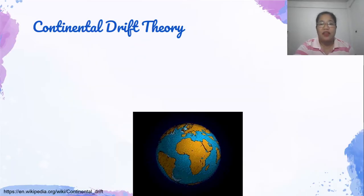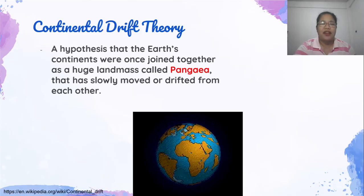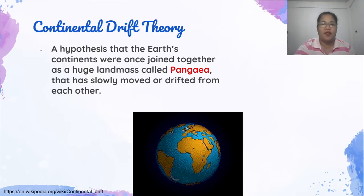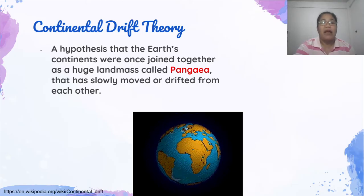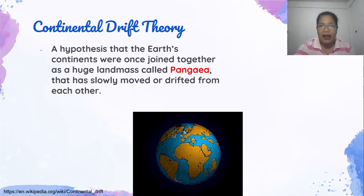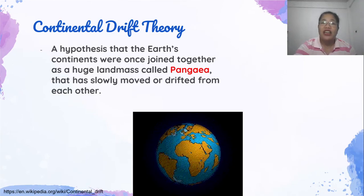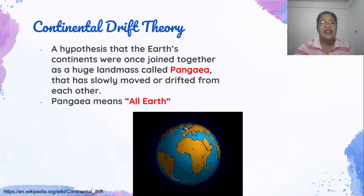Ano ang Continental Drift Theory? Makikita natin sa ating animation ang paggalaw ng mga kontinente ng mundo. Ang sabi ni Alfred Wegener, ang Continental Drift Theory ay nagsasabi na it is a hypothesis that the Earth's continents were once joined together as a huge landmass called Pangea that has slowly moved or drifted from each other. Ibig sabihin, ang mga kontinente noon ay magkakarugtong at iisa lamang ang kalupaan. Ang tawag sa napakalaking kontinente na ito ay Pangea, na isang Greek word na ang ibig sabihin ay All Earth.